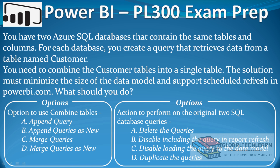Here we have two sets of options available. The first option is for combining tables, and the options are: append query, append query as new, merge queries, and merge queries as new. The second set of options is for the action to perform on the original two SQL database queries, and the options are: delete the queries, disable including the query in report refresh, disable including the query in the data model, and duplicate the queries.